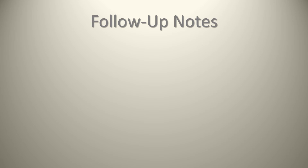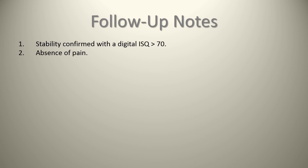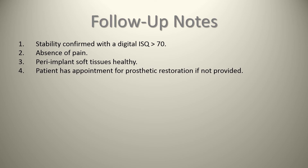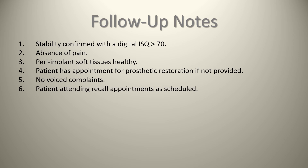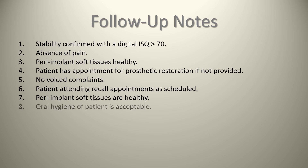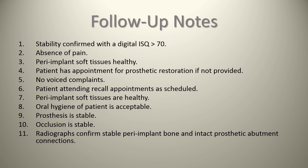For follow-up notes at the one-year mark, take a radiograph and confirm stability. I use a digital implant stability quotient assessed with my fingers — I note a digital ISQ greater than 70. Document: absence of pain, peri-implant soft tissues appear healthy, patient attending recall appointments as scheduled, oral hygiene acceptable, prosthesis stable, occlusion stable, and radiographs confirm stable peri-implant bone and intact prosthetic abutment connections.